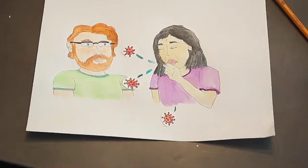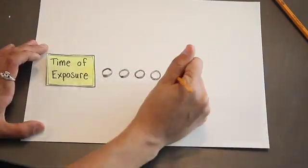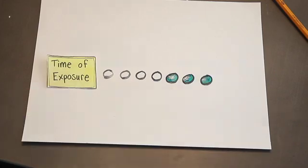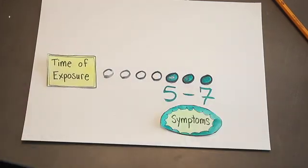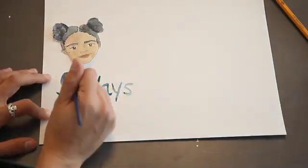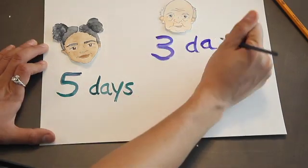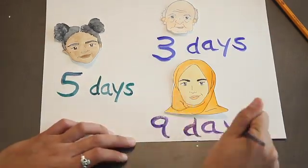After somebody has been exposed, generally people develop symptoms if they're going to be a person who develops symptoms within about five to seven days. That's variable depending upon the person and depending upon each person's immune system.